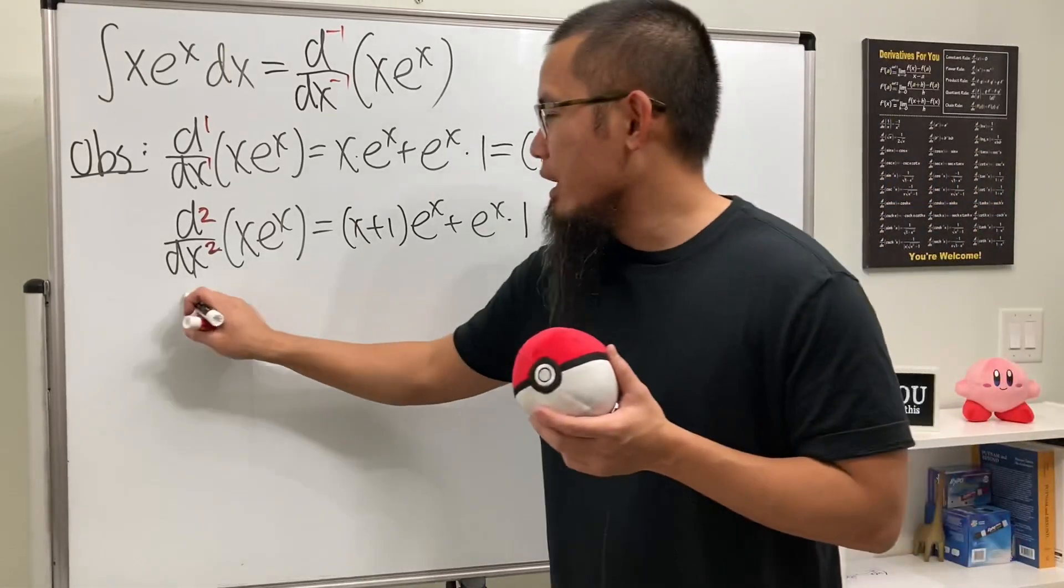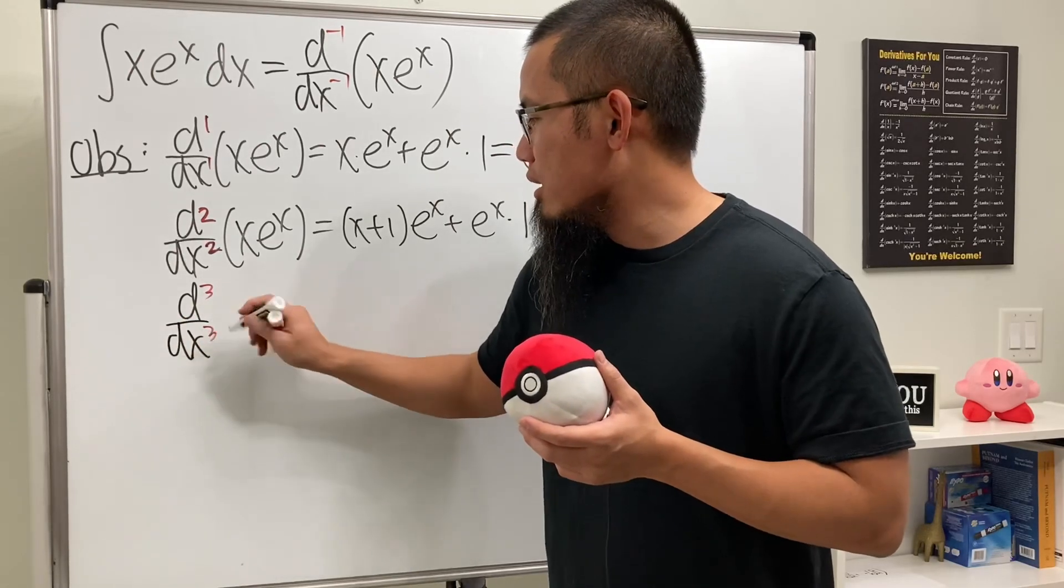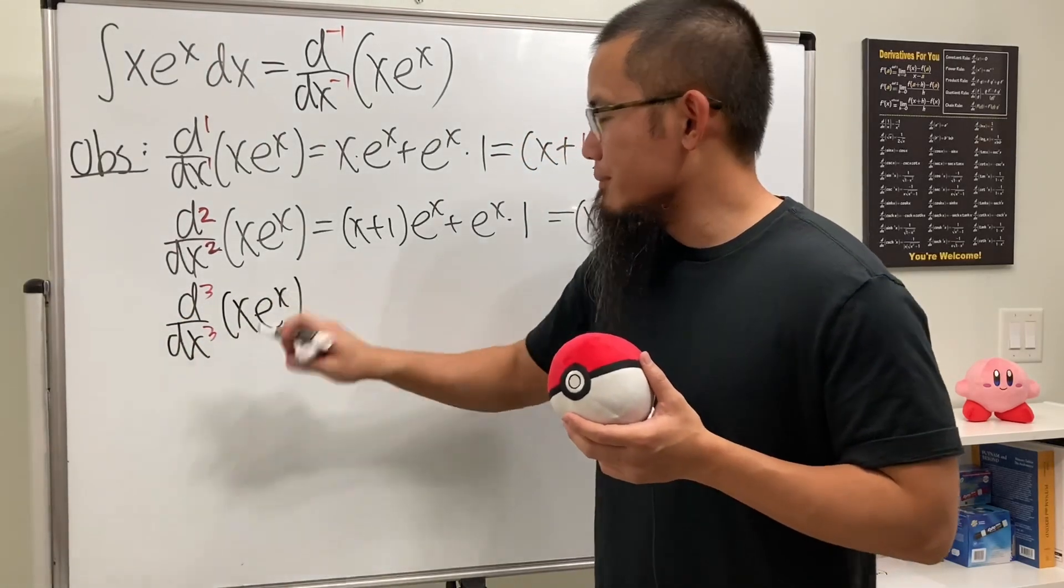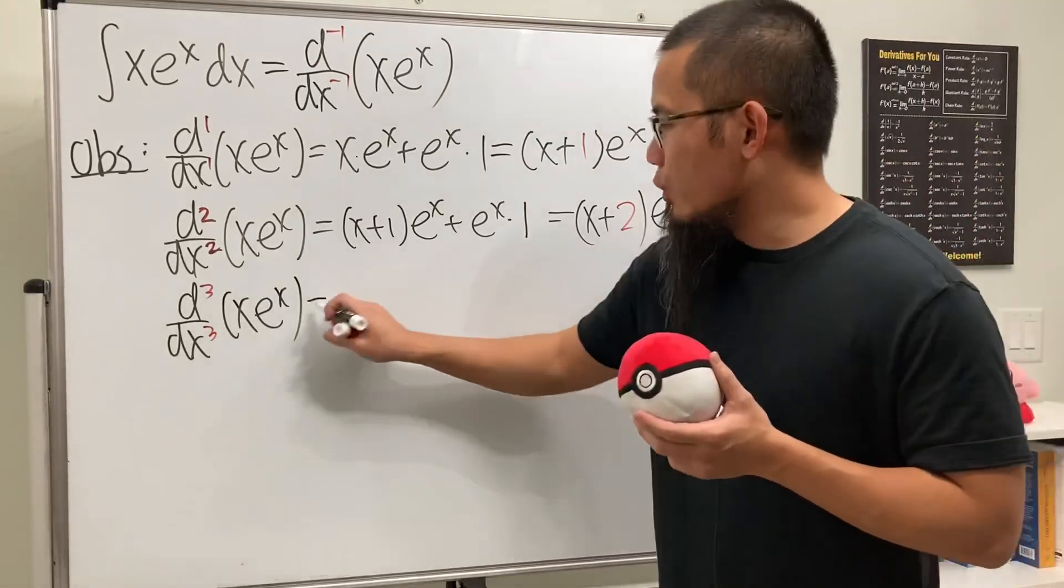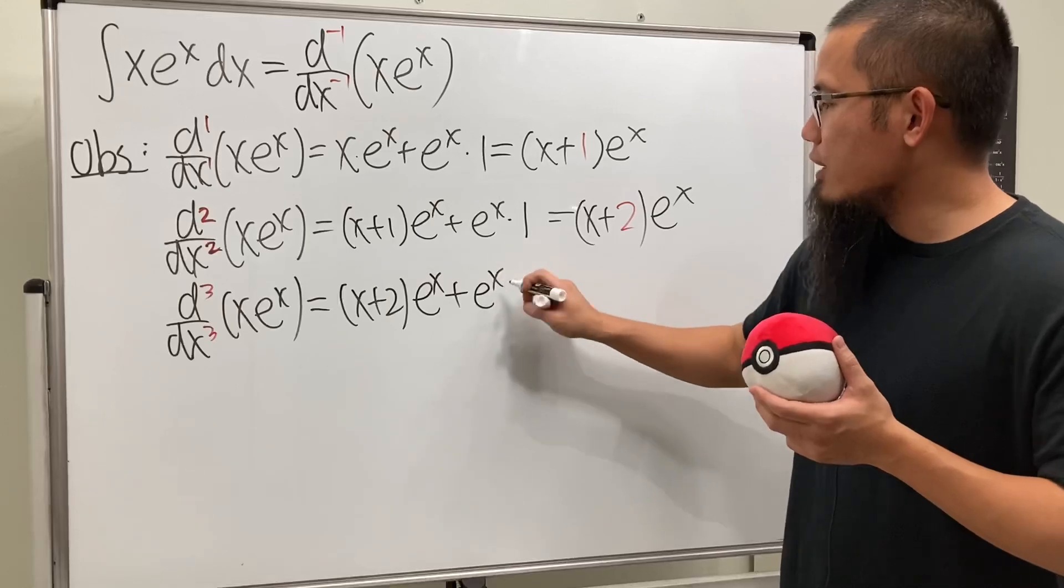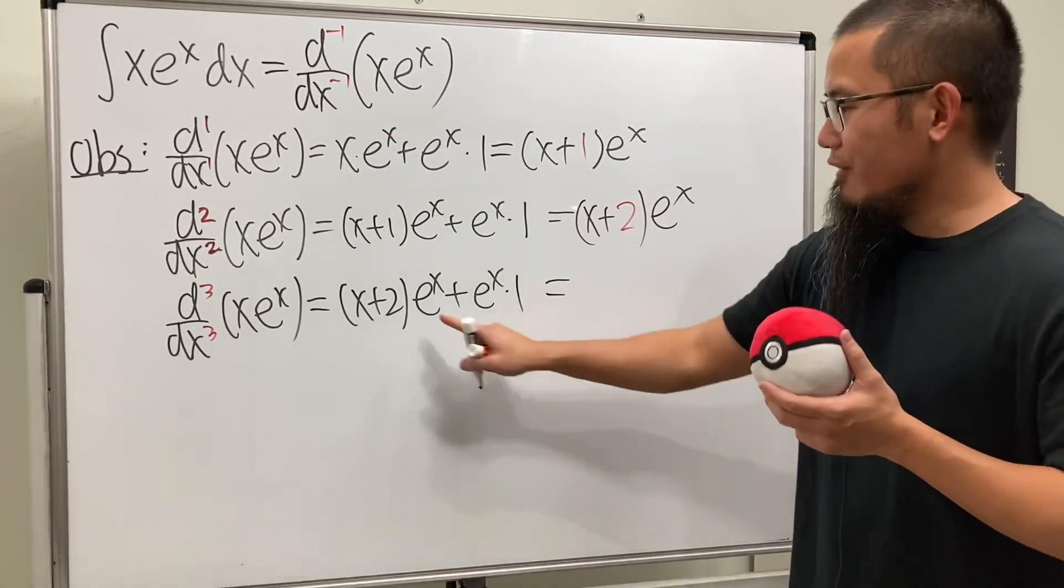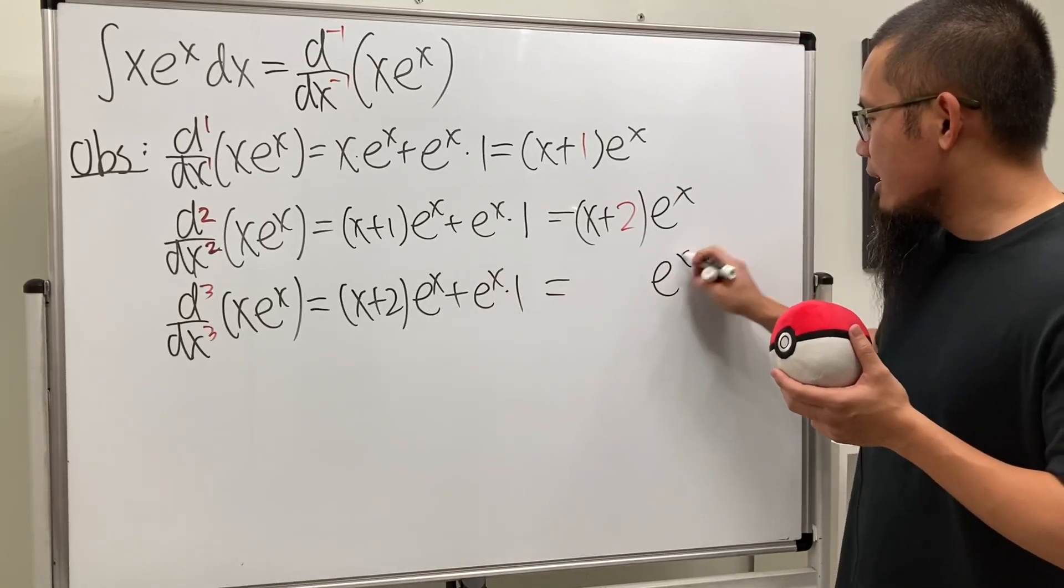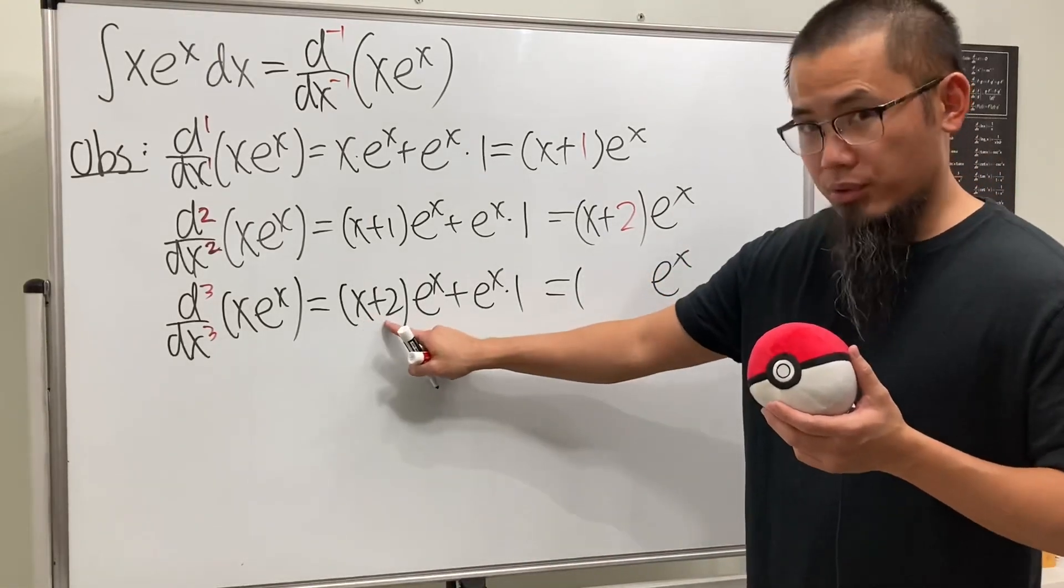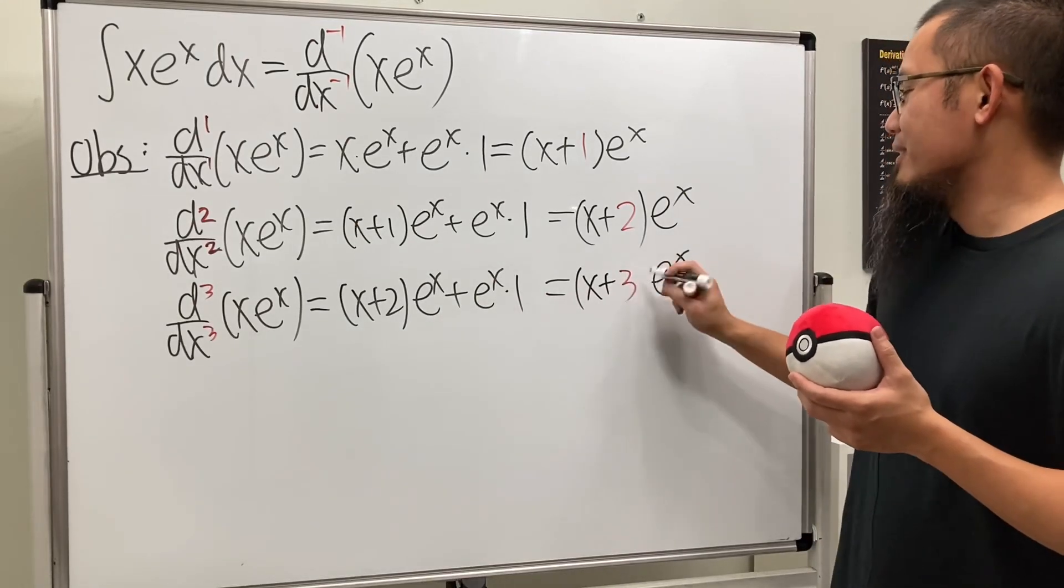If we have the third derivative, d^3/dx^3 of x times e^x. Keep the first function times the derivative of the second, plus the second function times the derivative of this. Factor out e^x again. And then you see, x+2 plus 1, so that's x+3. Look at that.